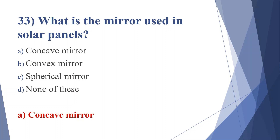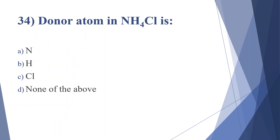Thirty-fourth question: the donor atom in ammonium chloride is — option A: nitrogen, option B: hydrogen, option C: chloride, option D: none of the above. Answer is option A, nitrogen.